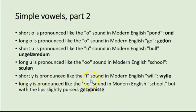Short Y is pronounced like the I sound in 'will' — 'willa.' Long Ȳ is pronounced like the U in 'school' but with the lips slightly pursed — 'gecȳðnisse.' The long Y in Old English has a U sound like the French U in 'tu,' or the German U with an umlaut. In Modern English our front vowels are all unrounded and our back vowels are all rounded, but this is a front vowel that's rounded.